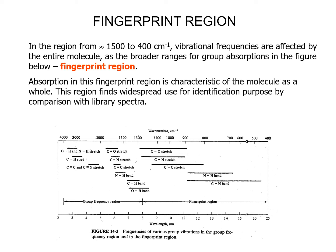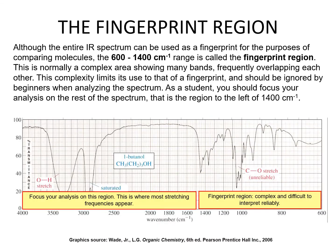In the region from 1500 to 400 centimeters to the minus one, vibrational frequencies are affected by the entire molecule — this is the fingerprint region. Absorption in this fingerprint region is characteristic of the molecule as a whole and finds widespread use for identification by comparison with library spectra. Although the entire IR spectrum can be used as a fingerprint, the 600 to 1400 centimeters to the minus one range is specifically called the fingerprint region. This area is complex, showing many overlapping bands, and should be ignored by beginners. As a student, you should focus your analysis on the region to the left of 1400 centimeters to the minus one.